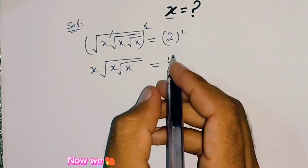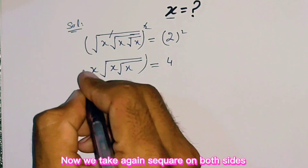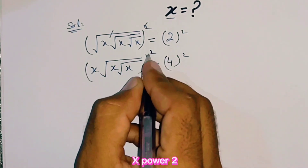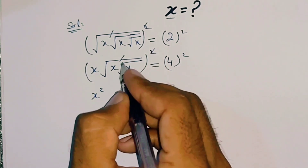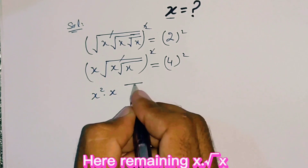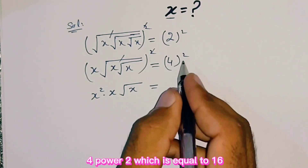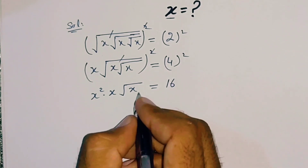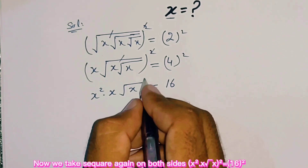Now we take square again on both sides. x power 2 — this square will be cancelled, leaving here x times square root of x. On the right side, 4 power 2, which is equal to 16. Now we take square again on both sides.